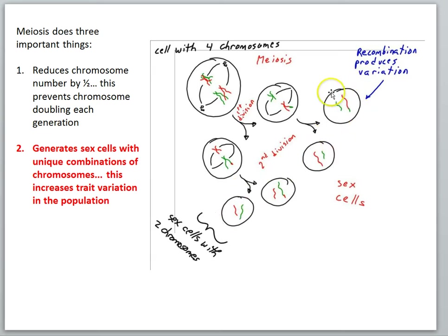But if you look carefully, the combinations are all unique. Here we have the small green one and a large red one with a little green tip. And we got the large red one, the small green one. We have the small red one and the large green one with a little red tip. And then the large green and small red. These are unique combinations of the maternal and paternal chromosomes. So what meiosis is doing here is the recombination process happening early.